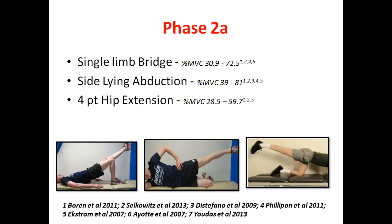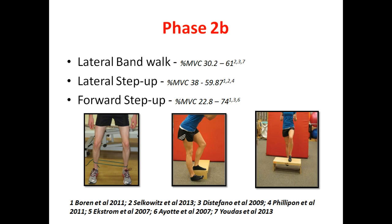In the next phase I have split it into two. Phase 2a is mainly mat-based. As you can see from the exercises, it's a progression from the previous ones. Single leg bridging requires more core control than the normal bridge, and the sidelying abduction involves a long lever. Another useful exercise is the four-point hip extension. In the same phase we move into more functional standing-based exercises. The first is the lateral band walk, which is a great exercise to involve the glute med in a weight-bearing position.